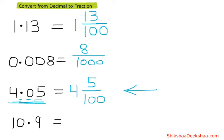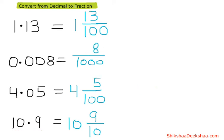Next we have ten point nine. Ten is the whole number so we write ten. After the point we change the number into a fraction — we write nine, and after the decimal there is just one digit, so we have just one zero at the bottom, making it ten. Our fraction is ten and nine by ten. Note: in the earlier example, eight actually means zero zero eight, but since zero zero eight equals eight we just write eight by thousand. Similarly, five is actually zero five, but since zero five equals five we write five by hundred.